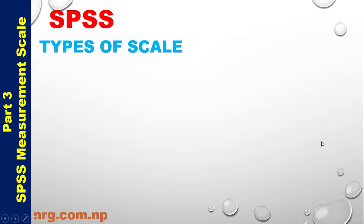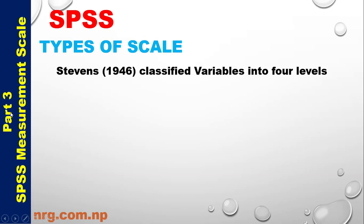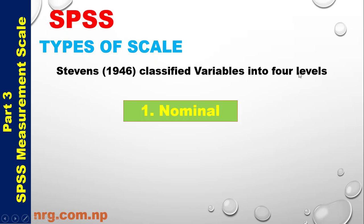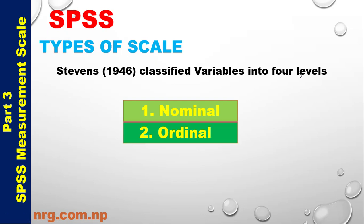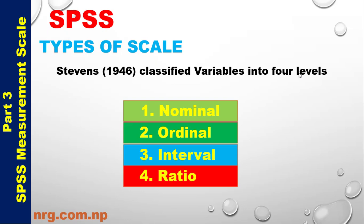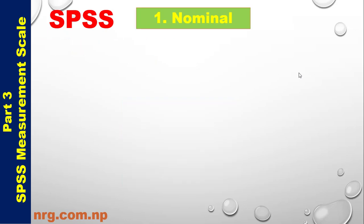Types of Measurement Scale: According to Stevens (1946), variables are classified into four levels. They are: 1. Nominal Scale, 2. Ordinal Scale, 3. Interval Scale, 4. Ratio Scale.